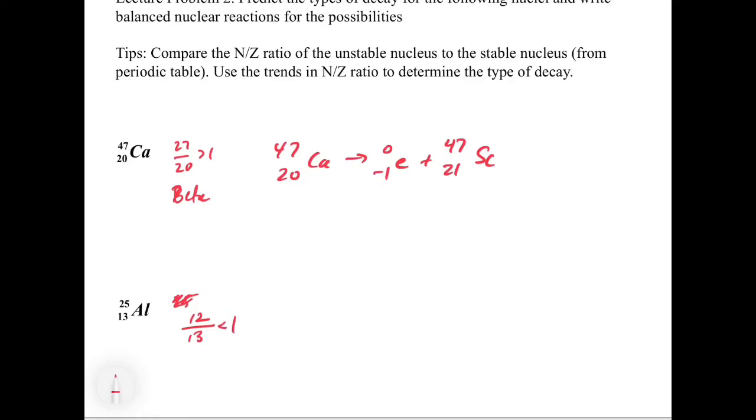So we're thinking either one of two possibilities. We're thinking either electron capture or positron emission. Those are our two that are going to allow us to convert a proton to a neutron. In this case, you could pick either one and write it out. It doesn't matter. Both would give you the right answer, but I'm going to show you both.